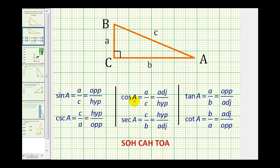The cosine of an angle is equal to the ratio of the adjacent side to the hypotenuse, and since cosine and secant are reciprocals, secant of an angle is equal to the ratio of the hypotenuse to the adjacent side. The tangent of an angle is equal to the ratio of the opposite side to the adjacent side, and since cotangent and tangent are reciprocals, cotangent of an angle is equal to the ratio of the adjacent side to the opposite side. The nice thing is if we can find sine, cosine, and tangent, we can just find the reciprocals to find the other three trig function values.